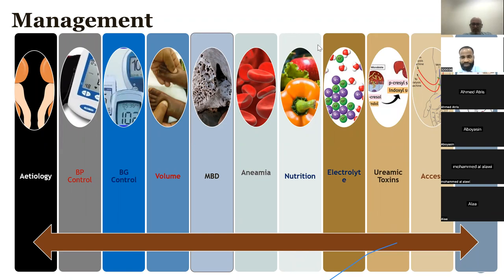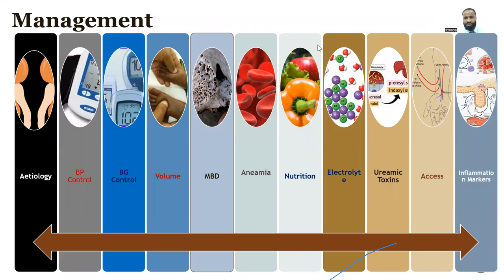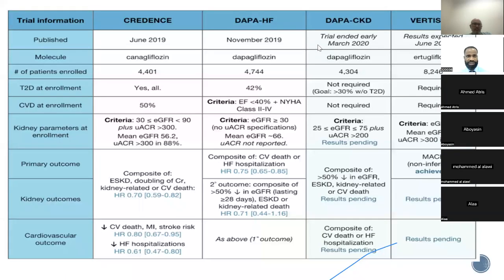Lastly, inflammatory markers: we have seen an association between elevated C-reactive protein and cardiovascular risk in CKD patients. Other inflammatory markers like interleukins have been well studied and shown to increase cardiovascular risk with elevated levels. C-reactive protein is readily accessible, can be checked routinely, and persistent elevation correlates with worse outcomes in CKD patients.